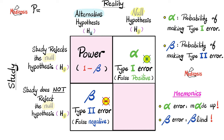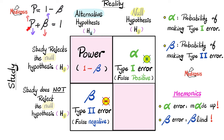Power equals 1 minus beta, and therefore power plus beta equals 1. Anytime two entities add up to a constant, they are inversely correlated. If the beta error decreases, statistical power increases, and vice versa. Statistical power is a good thing; beta error is a bad thing. When one is up, the other is down.